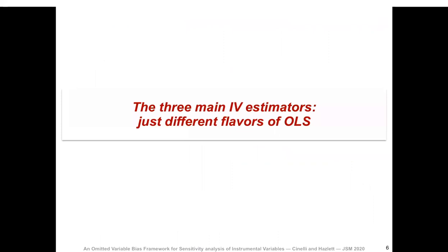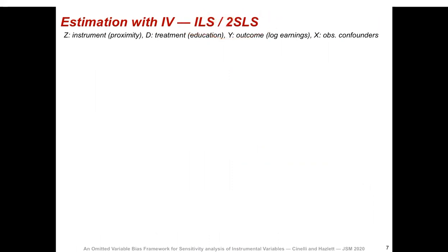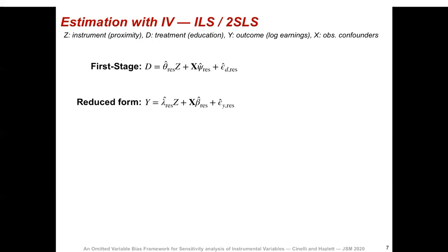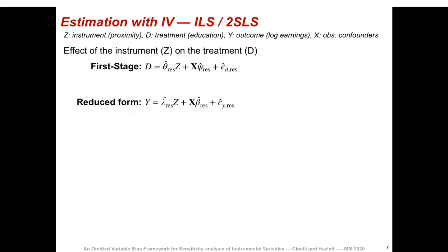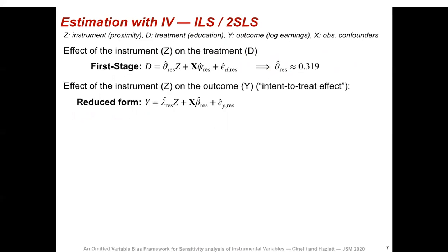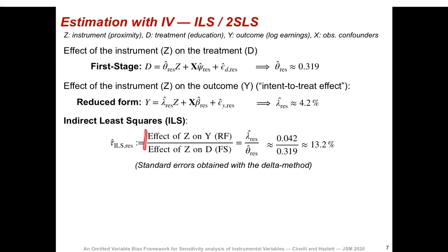To give a precise answer, we need to understand how IV estimation works. Starting with indirect least squares and two-stage least squares: we need two auxiliary regressions — the first stage regression and the reduced form regression. The first stage captures the effect of the instrument on the treatment; in this example, those who grew up near college had on average an extra 0.3 years of education. The reduced form captures the effect of the instrument on the outcome; those who grew up near college had on average 4.2% higher earnings. To obtain the IV estimate, we simply take the ratio of these two coefficients, which gets us to the 13.2% estimate.